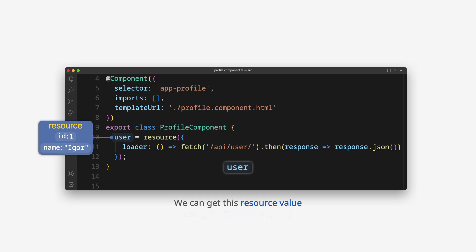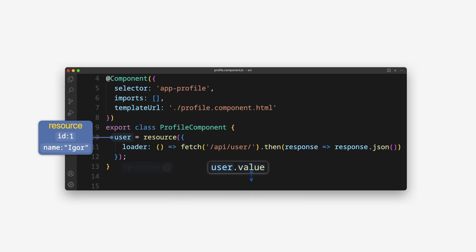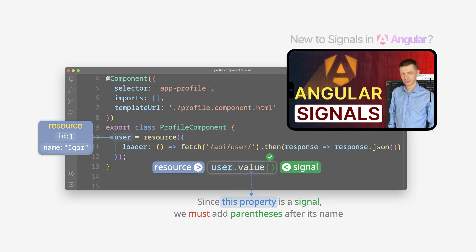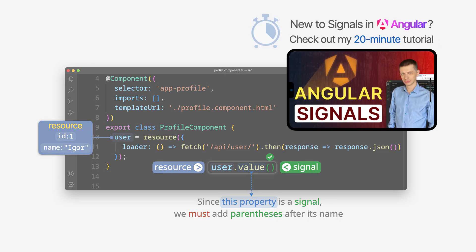We can get this resource value using the value property. Since this property is a signal, we must add parentheses after its name. If you're new to signals in Angular, check out my 20-minute tutorial.